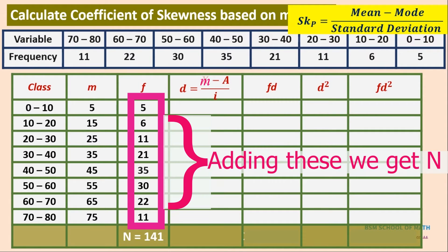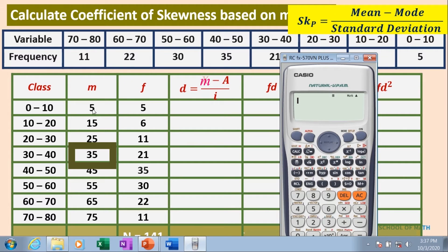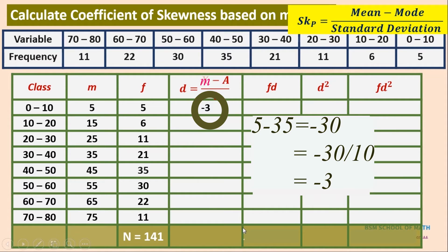The total frequency ΣF = N = 141. For the D column, D = (M − A) ÷ I, where the assumed mean A = 35 and the class interval I = 10. So for M = 5: D = (5 − 35) ÷ 10 = −3, then −2, −1, 0, and so on.